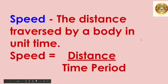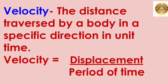We also learned about speed. The distance traversed by a body in unit time is speed. Speed is equal to distance upon time period. We learned about velocity. The distance traversed by a body in a specific direction in unit time is velocity. Velocity is equal to displacement upon period of time.